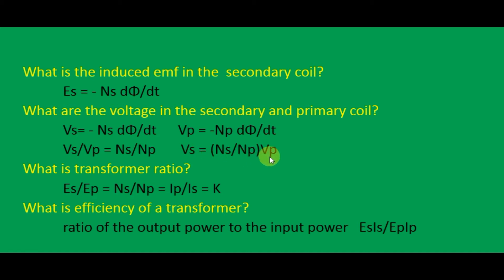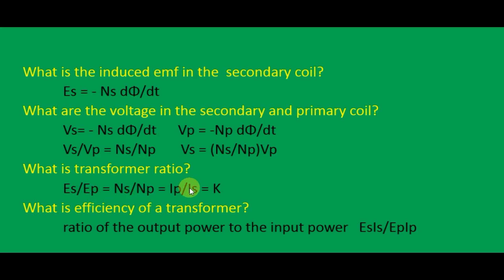What is the transformer ratio? The transformer ratio is represented by the letter K. K is defined as ES divided by EP, which equals NS divided by NP, which equals IP divided by IS. This ratio is called the transformer ratio.